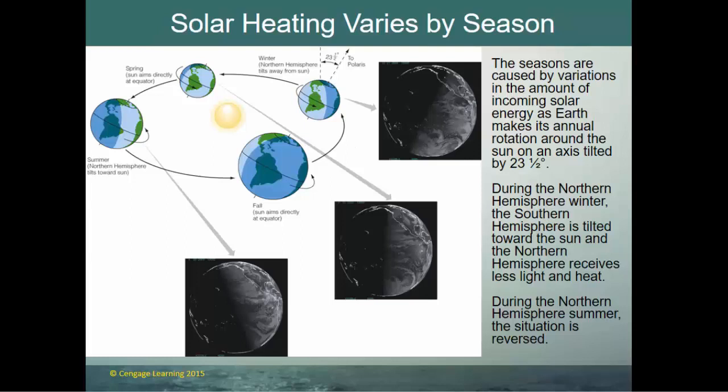The seasons are caused by variations in incoming solar energy as Earth makes its annual rotation around the Sun on an axis tilted about 23½ degrees. That axis always points in the same direction — toward the North Star. In summer, the Northern Hemisphere is tilted toward the Sun and gets more direct sunlight. In winter, we're pointed away from the Sun, receiving less solar insolation, and the North Pole experiences extended darkness.